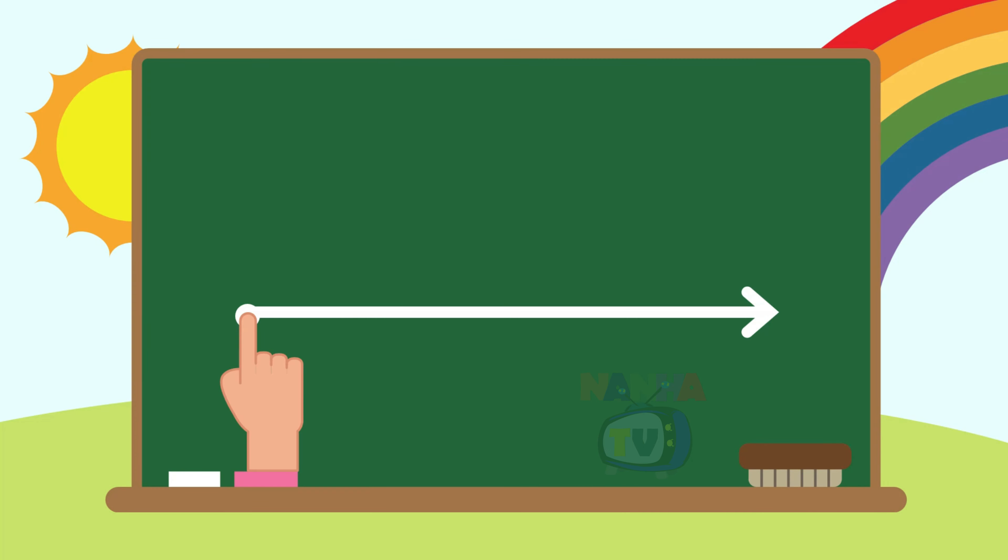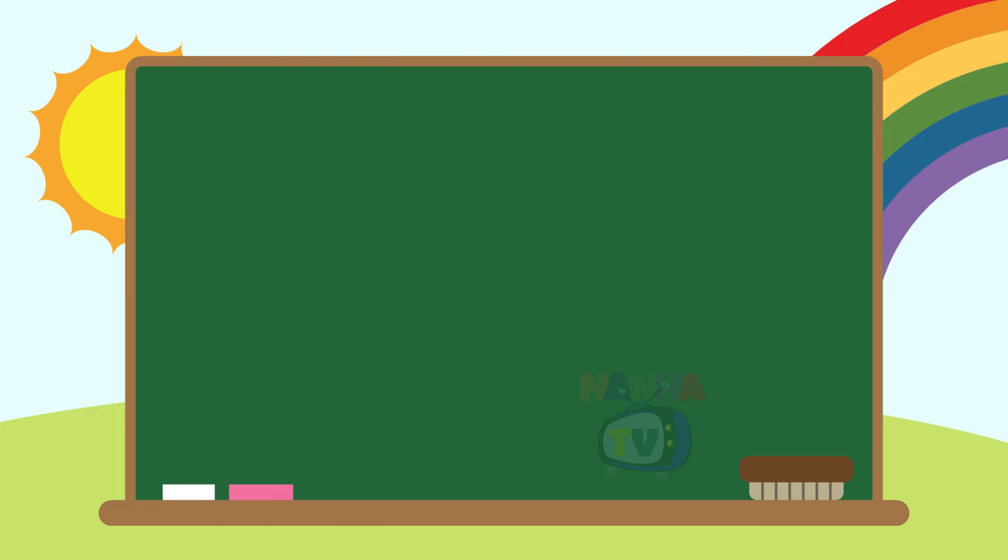The next letter is B. Sound? B. A. A. T. T. And it becomes? Bat. Yes, it's become Bat. B. Bat. Bat.